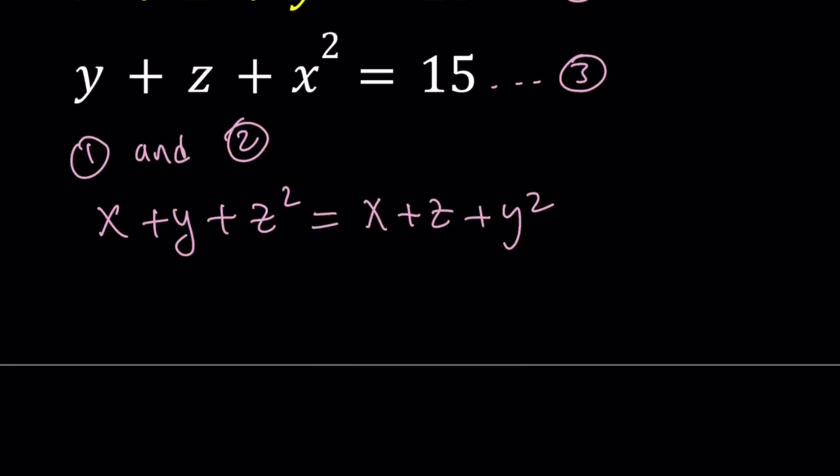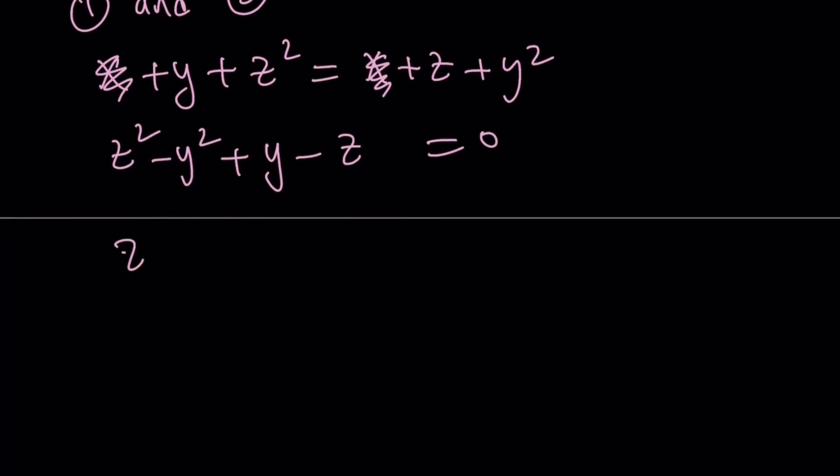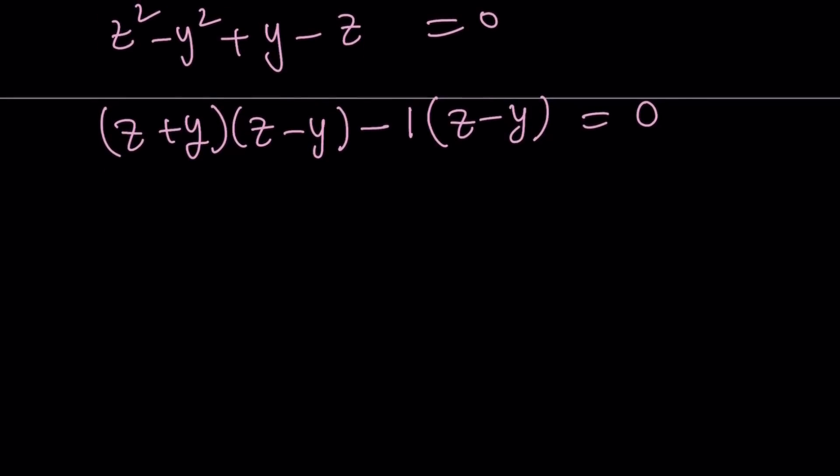This is good because x cancels out, leaving us with something nice and factorable. Let's put everything on the same side, subtracting y squared and subtracting z. So it's z squared minus y squared plus y minus z equals zero. This is nice because we can go ahead and write this as z plus y times z minus y from difference of two squares. And this one is negative one times z minus y. In other words, we can factor this by grouping. And now we have a common factor as z minus y. Let's take it out. And now we get z plus y minus one equals zero.